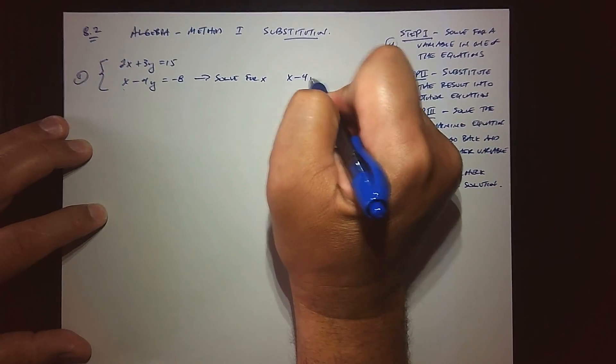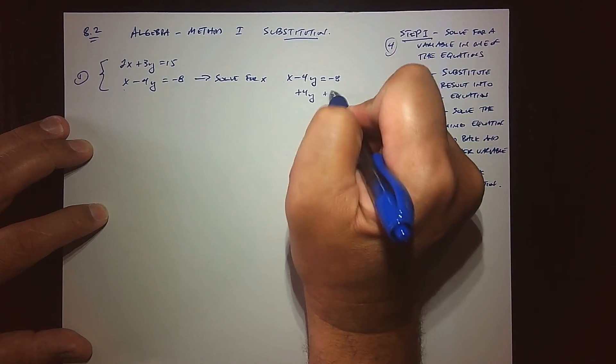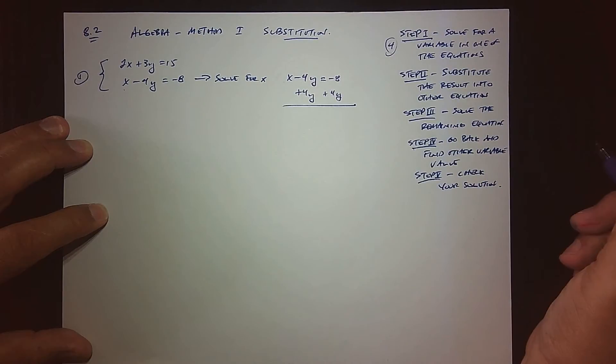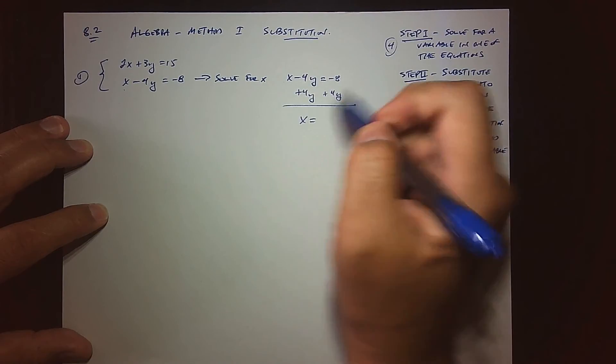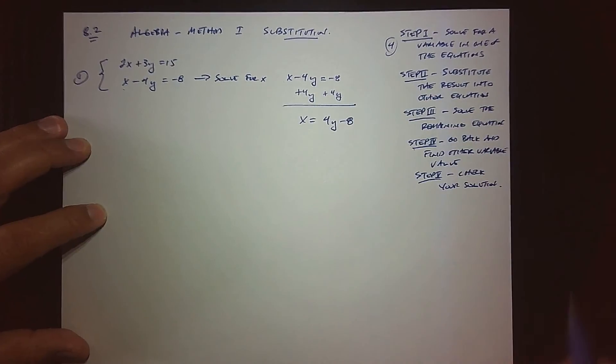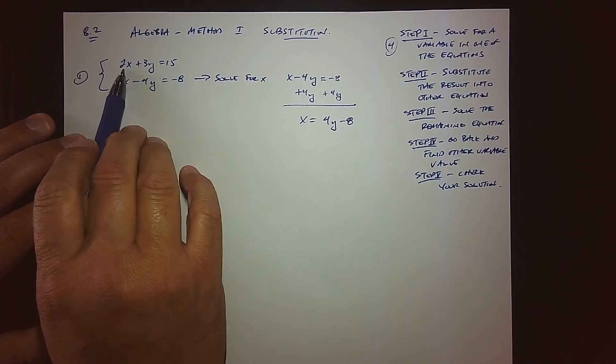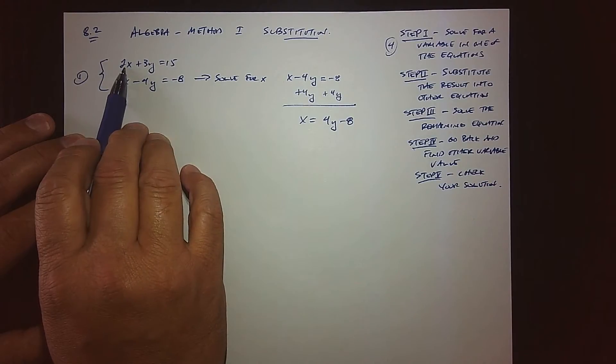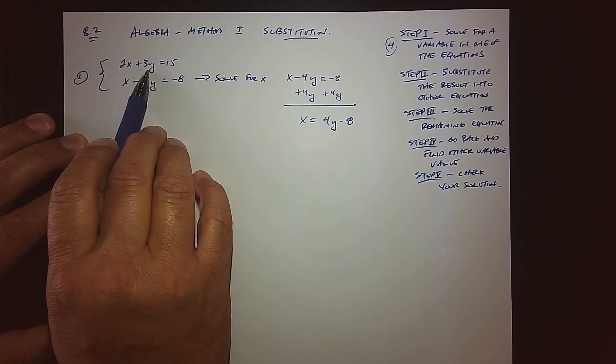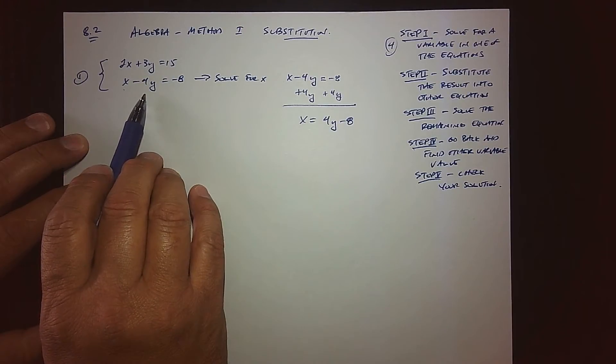I can just take this equation and solve for x by adding 4y to both sides. That's a real easy thing to do. I encourage you if you see something easy, go for it. If I solve for x here I'd eventually have to divide by 2, divide by 3 to solve for y, or divide by negative 4—all doable.